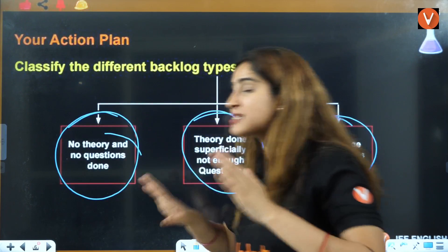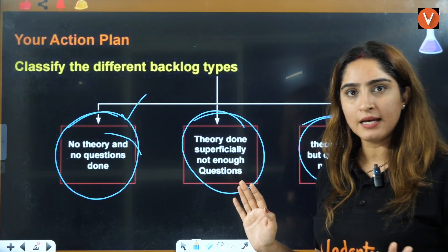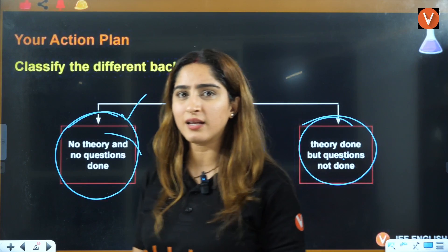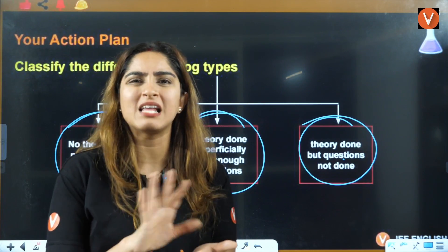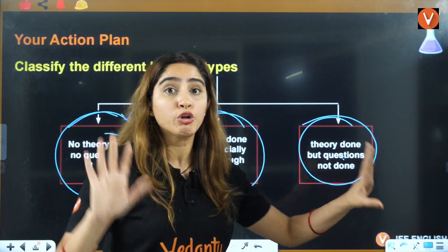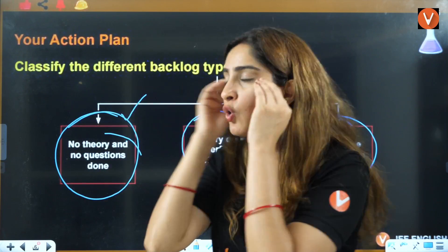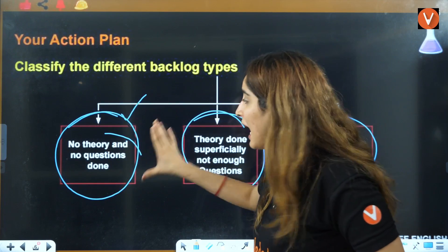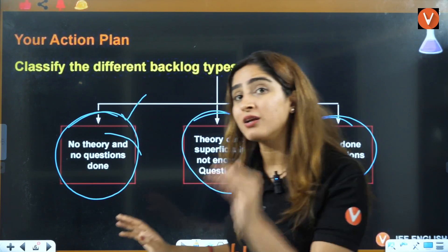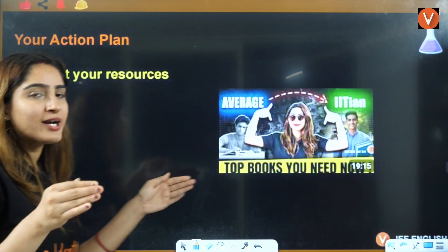Identifying your backlogs means categorizing them into three types. First: no theory, no questions done — nothing touched from that chapter. Second: theory done superficially — you've read it like just skimming, not confidently, and questions not practiced. Third: theory done confidently but not enough question practice. The first category takes maximum time, the second takes less, and the third takes minimum time since theory is already done and only question practice remains.